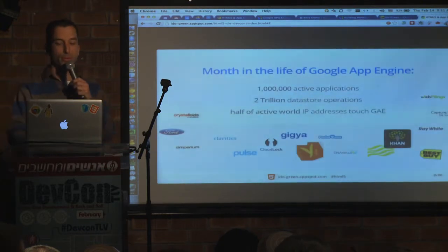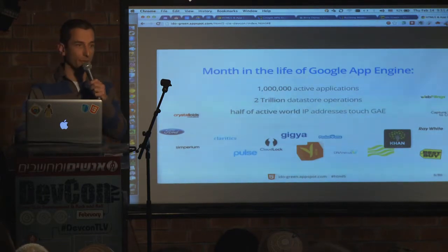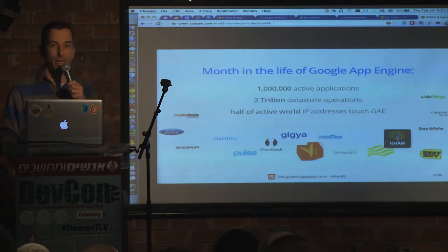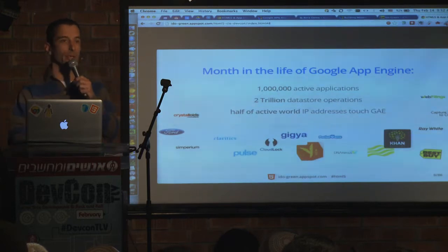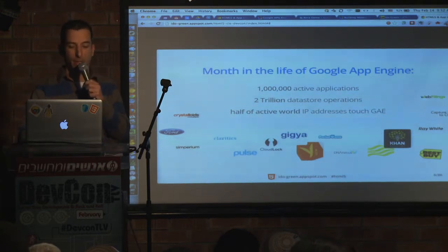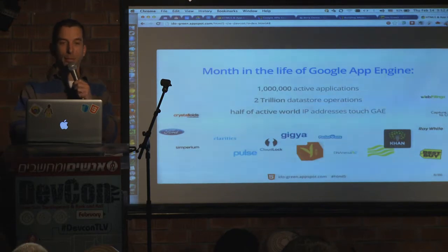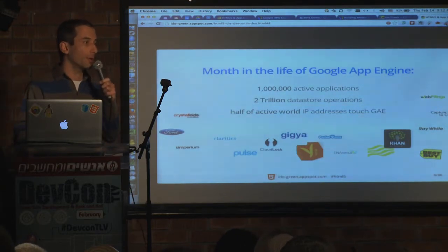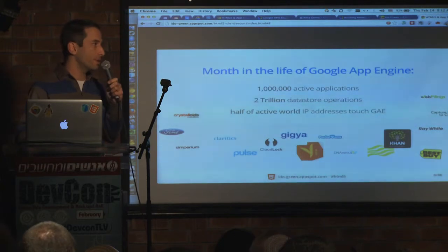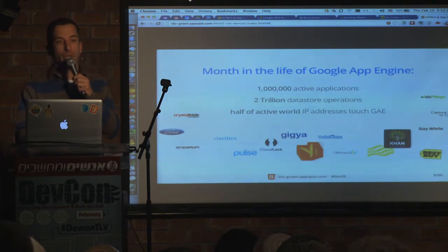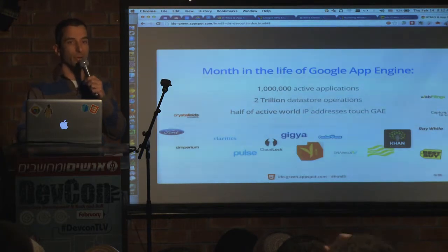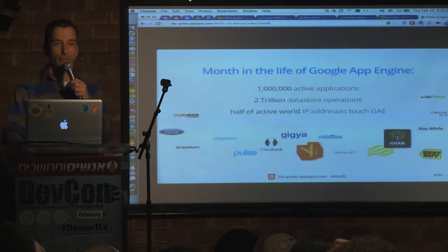Just to put things in perspective with how many people and companies are using it — here you can see Gigia, the Israeli startup that is very successful with a huge amount of traffic built on top of App Engine, and Khan Academy, along with lots of other successful startups. Khan Academy actually had a great blog post about how they leveraged App Engine's maintainability and scalability, and how little they needed to do when traffic spiked after their CBS 60-minute show.